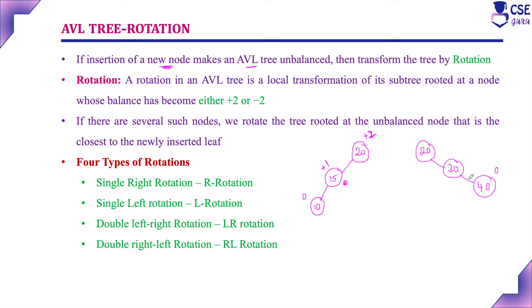Similarly, if the balance factor is minus 2 — for example, a tree 20, 30, 40 — here the balance factor is 0 minus 2, giving minus 2. In both cases, the root node becomes unbalanced. Whenever inserting a new node makes the AVL tree unbalanced, you need to transform it into a balanced one.